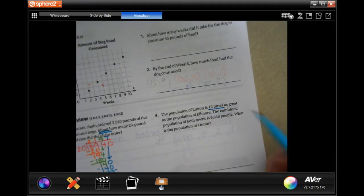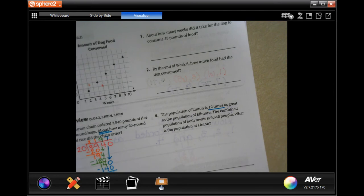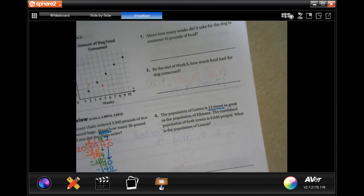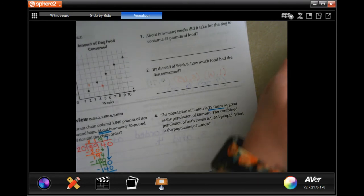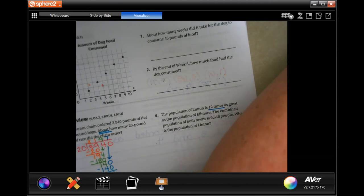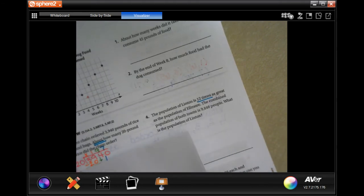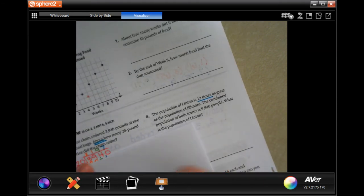All right, the population of Linton is 12 times as great as the population of Elmore. Combined, the population of both towns is nine thousand six hundred and forty-six people. What is the population of Linton? We're going to work this in division. So we have Linton and we're going to do Elmore first.